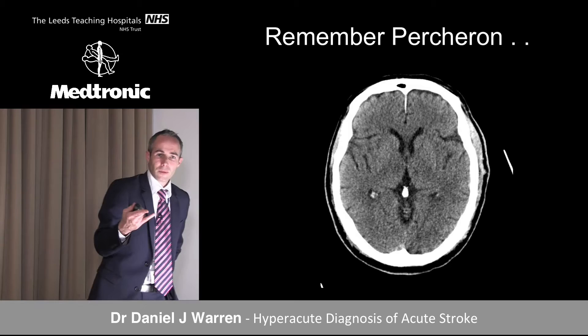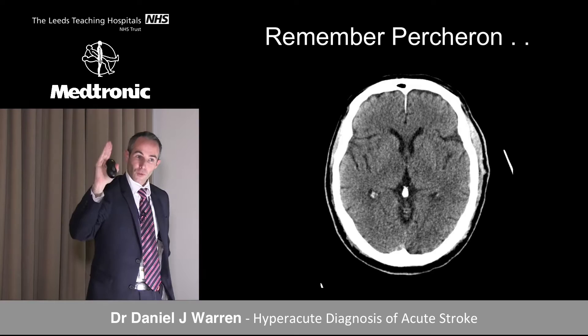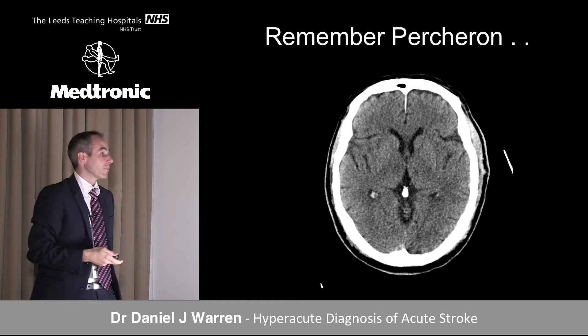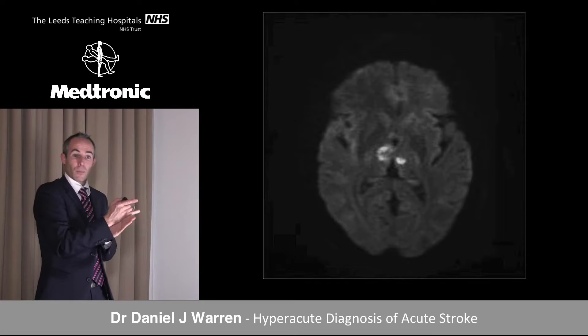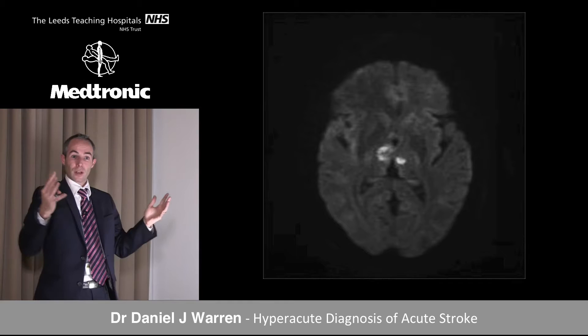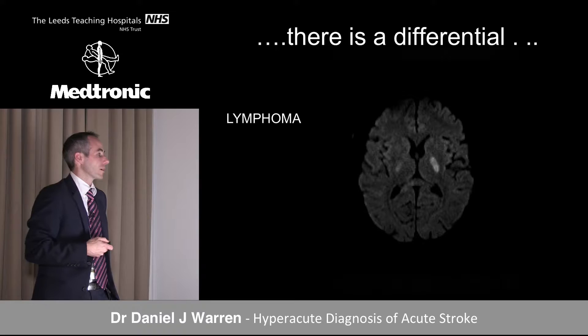If you see bilateral infarction it can still be arterial — the artery of Percheron is a common dominant perforator branch off the P1, giving perforators to both thalami. Subtle reduced attenuation on CT, confirmed on MR with diffusion restriction, gives bilateral thalamic infarction in a single arterial territory. Other considerations include venous insult, which often causes a lot of swelling. Not everything that restricts is infarction — bilateral lateral thalamic and lenticular nuclear T2 signal with diffusion restriction can represent lymphoma.